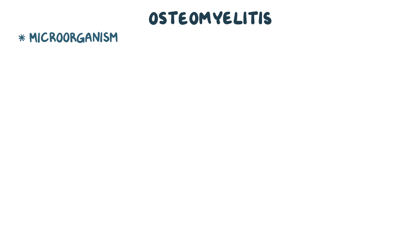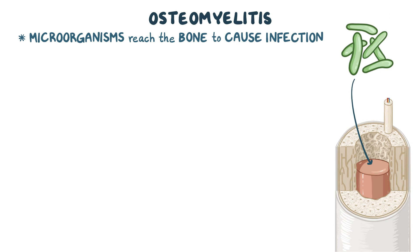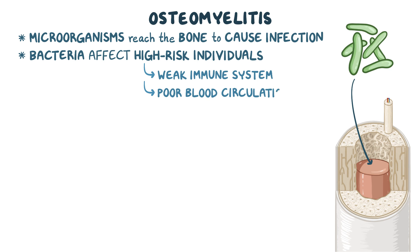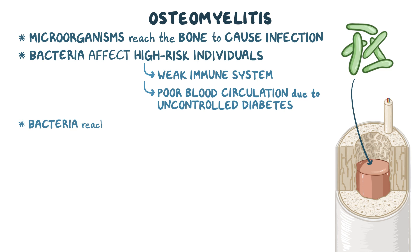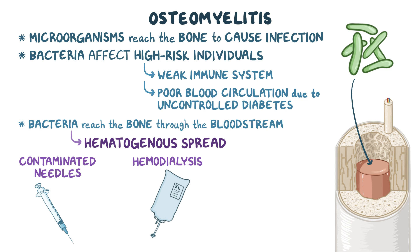In osteomyelitis, microorganisms such as bacteria reach the bone to cause an infection in a few different ways. Bacteria particularly affect certain high-risk individuals, like those with a weak immune system and those with poor blood circulation due to uncontrolled diabetes. A major way that bacteria reach the bone is through the bloodstream, called hematogenous spread. This might happen in a person who uses contaminated needles to inject drugs, or in individuals undergoing hemodialysis that may be contaminated by bacteria, or even through the dental extraction of an infected tooth.